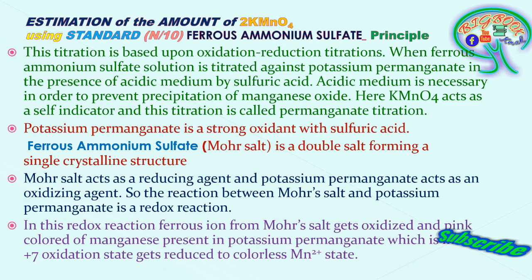Potassium permanganate is a strong oxidant with sulfuric acid — in acidic medium it acts as a strong oxidant. Ferrous ammonium sulphate is a double salt forming a single crystalline structure, and is called Mohr's salt. Mohr's salt acts as a reducing agent whereas potassium permanganate acts as an oxidizing agent, so the reaction between Mohr's salt and potassium permanganate is a redox reaction.